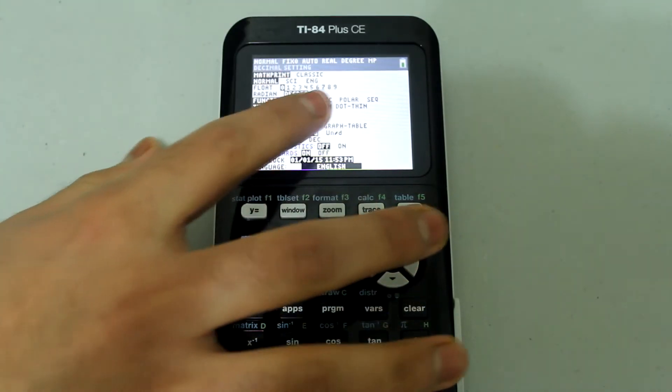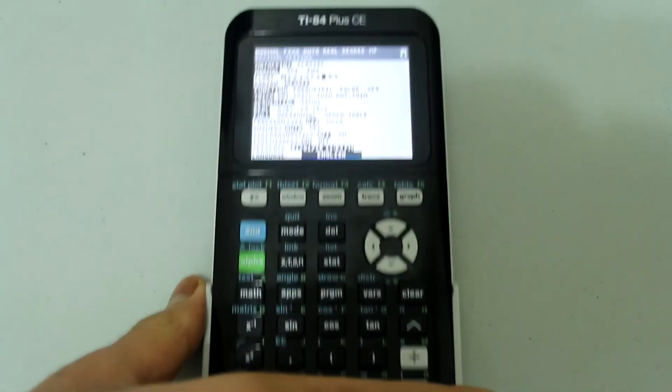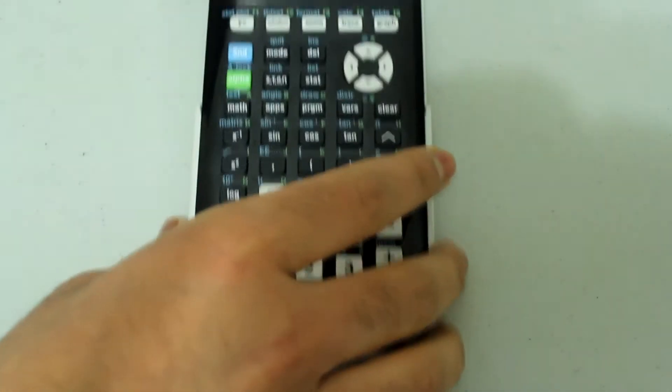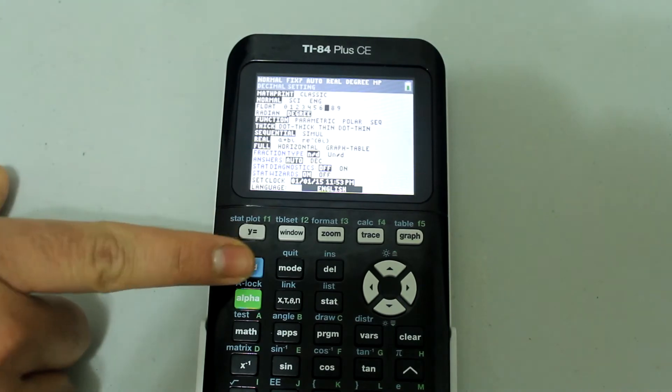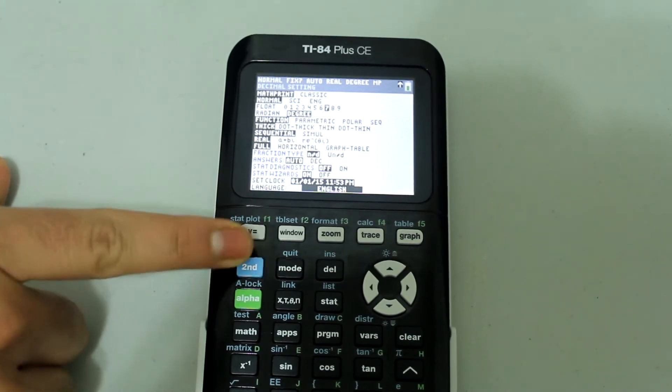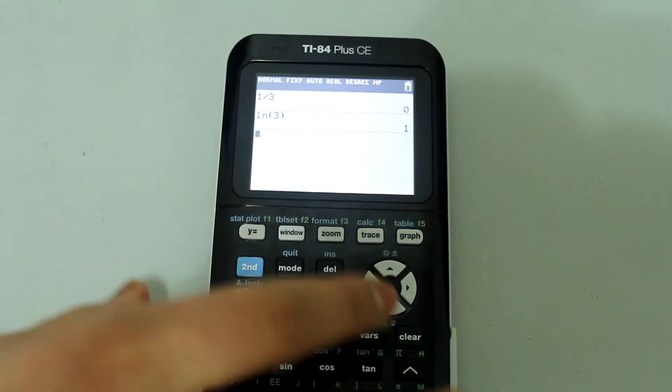So once the cursor is blinking on 7, for example, I'll press enter, and now let's hit second mode to select the quit option.